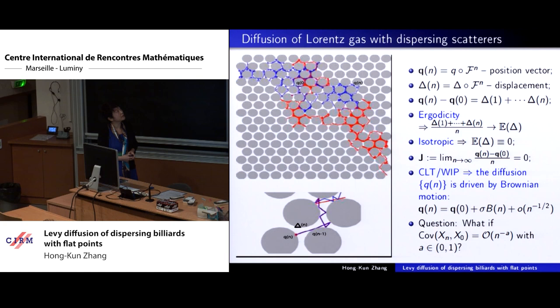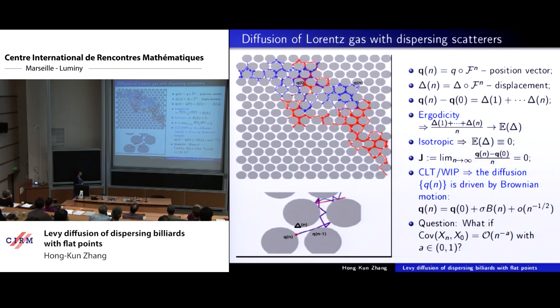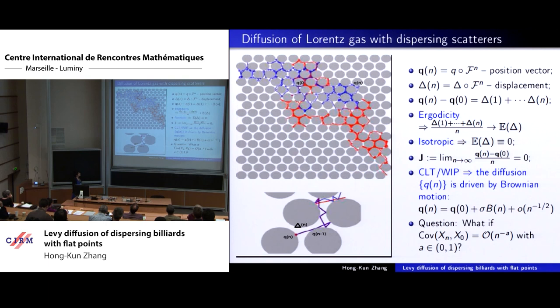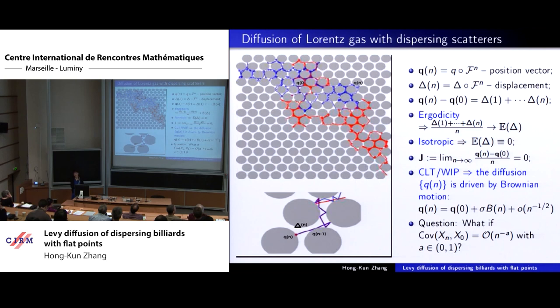This Lorentz gas model was constructed around 1905–06. It took almost 60 years until 1960 when Sinai was able to translate this physical model to a mathematical model — the so-called Sinai billiard. He proved the ergodicity of the Sinai billiard. According to ergodicity we have the strong law of large numbers. The position of the particle at time n is essentially controlled by a drift corresponding to the expected value of the displacement function. For classical billiards, by the isotropic property, the expected value of the displacement is zero.